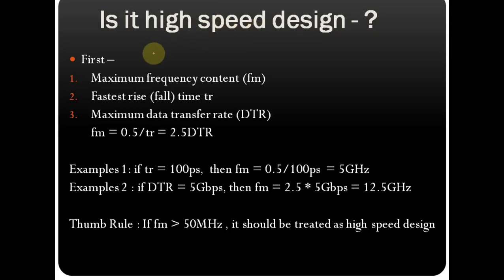There are two methods to find out if your design falls under high speed design or low speed design. The first method: we need to know the maximum frequency content of your circuit, given by fm. This is a key parameter you should know.